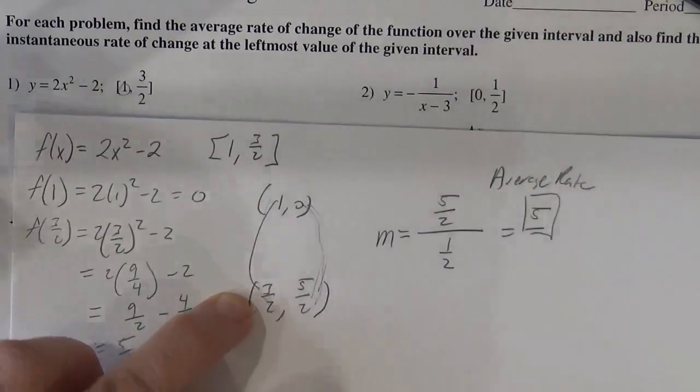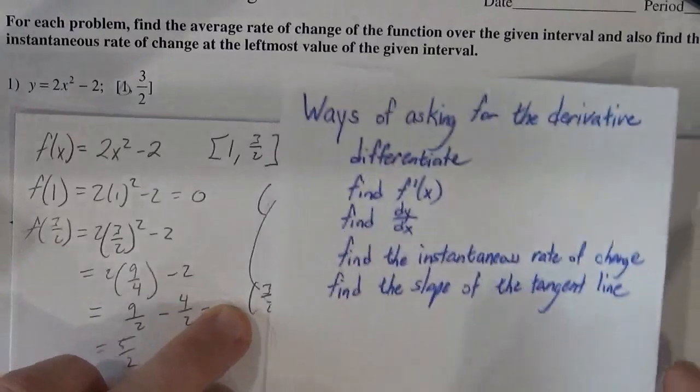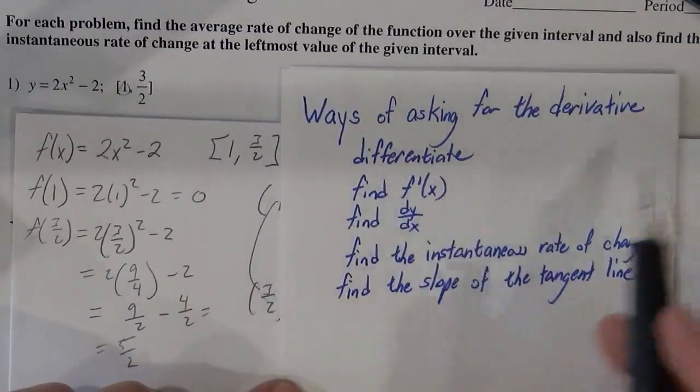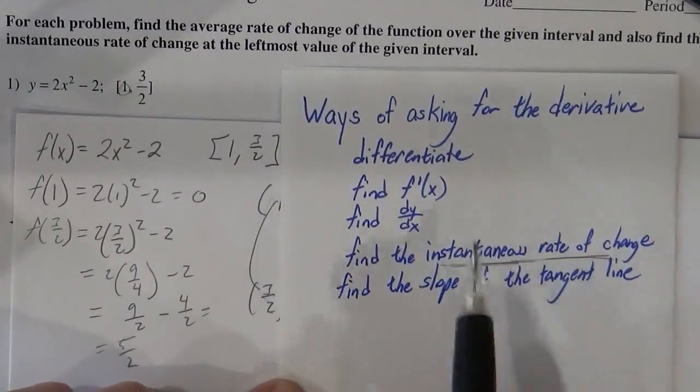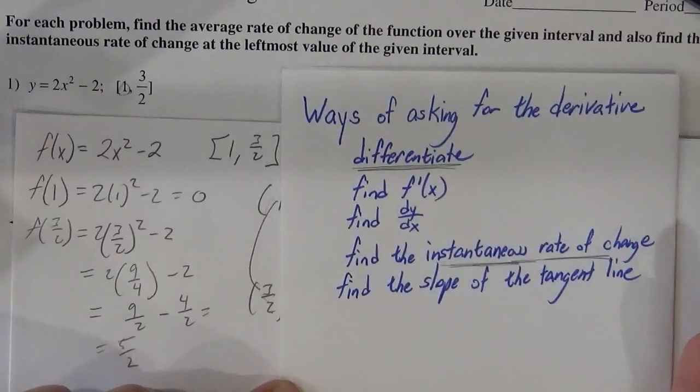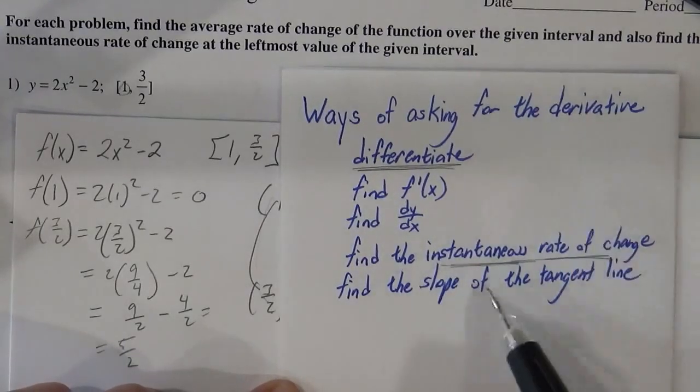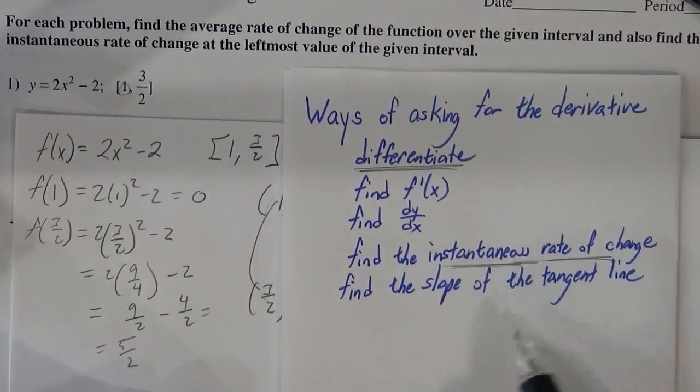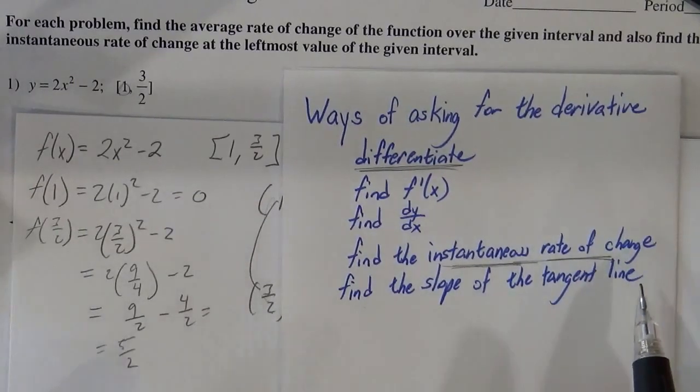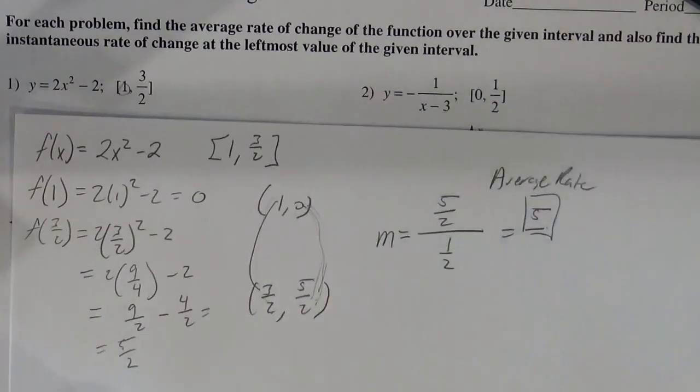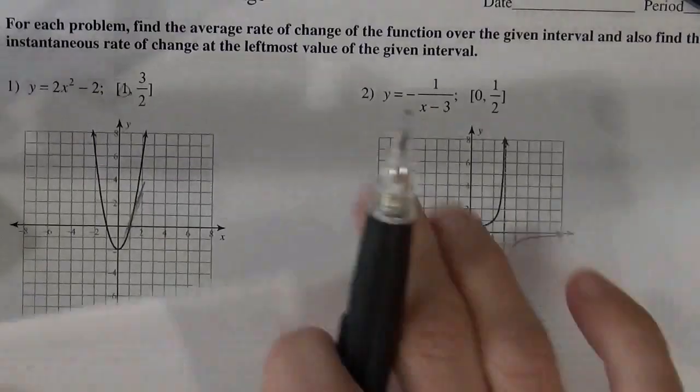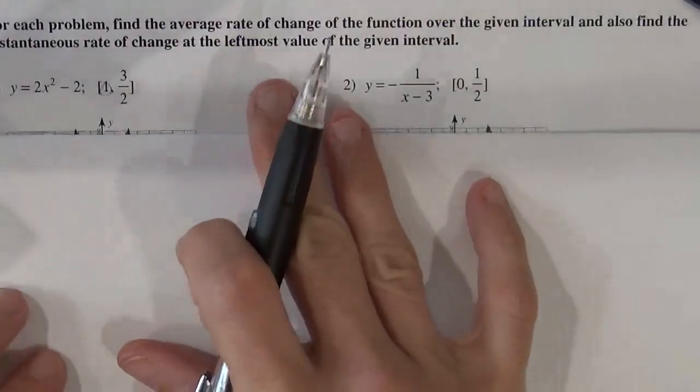And then the instantaneous rate of change, now we get to finally use our calculus. Instantaneous rate of change is another way of asking us to find the derivative. The derivative gives the instantaneous rate of change of a function. It gives the slope of the tangent line. So what we're going to do is find f prime.